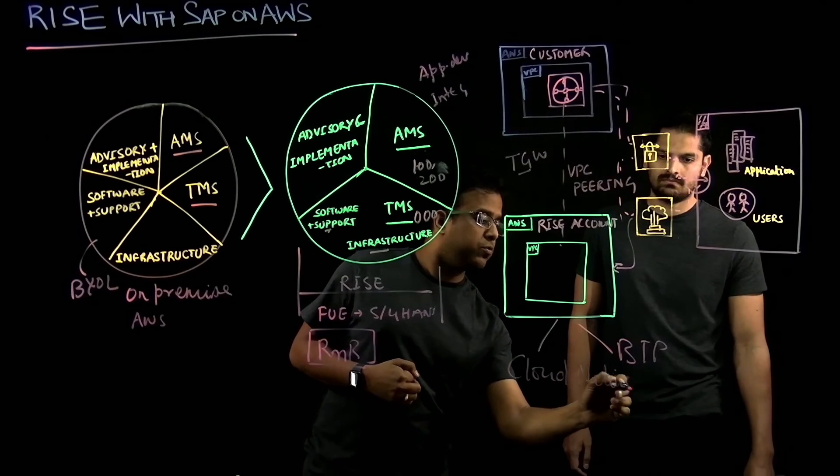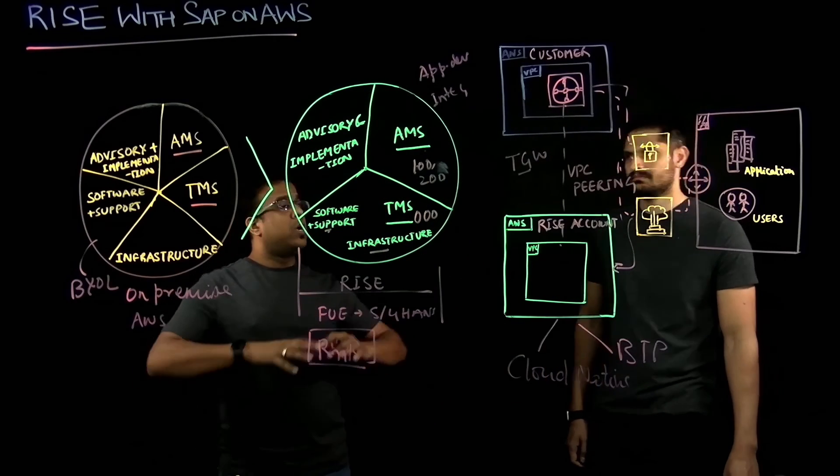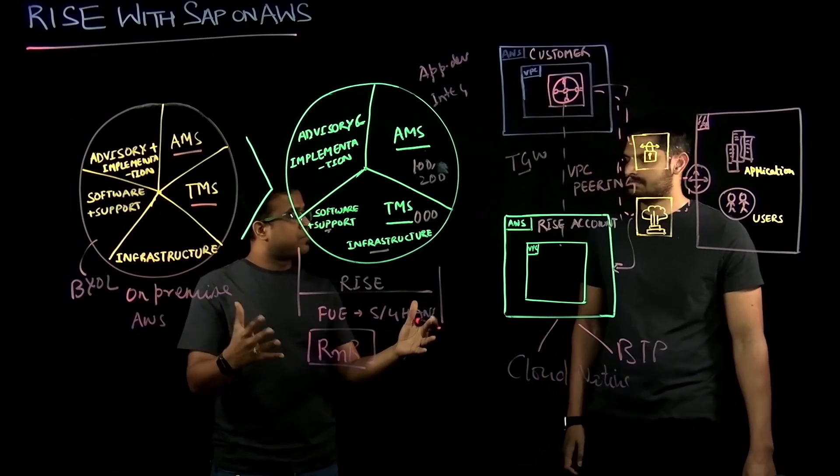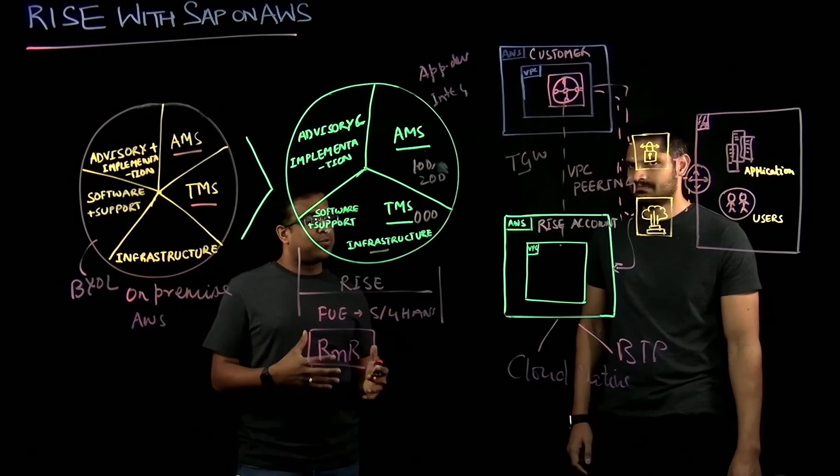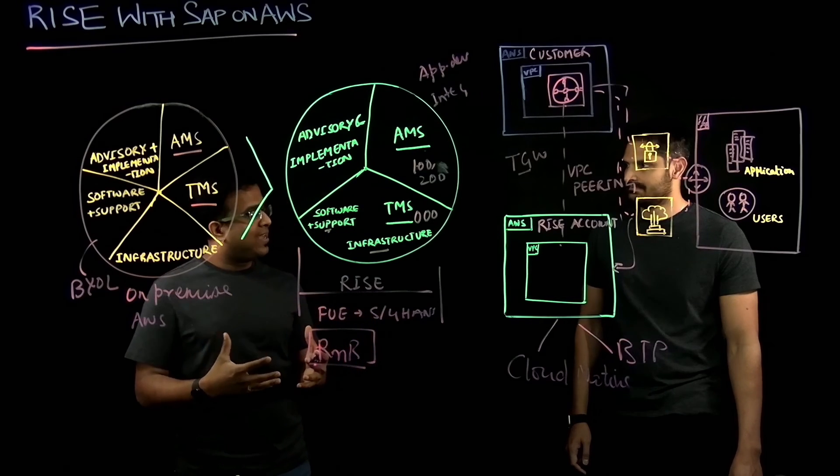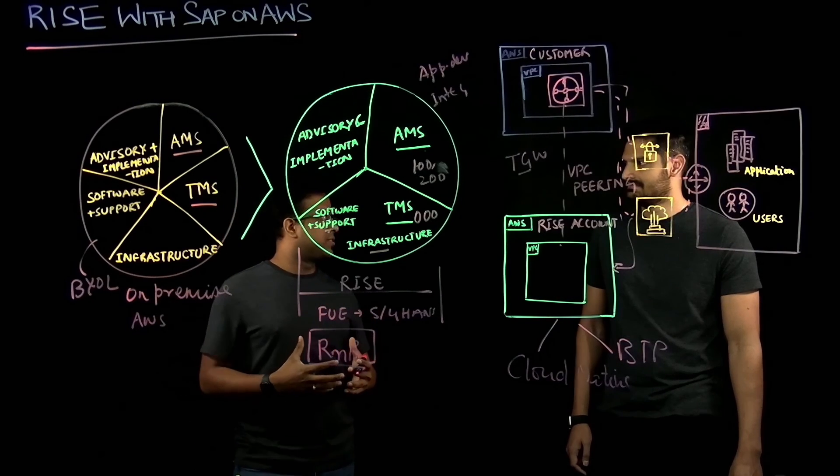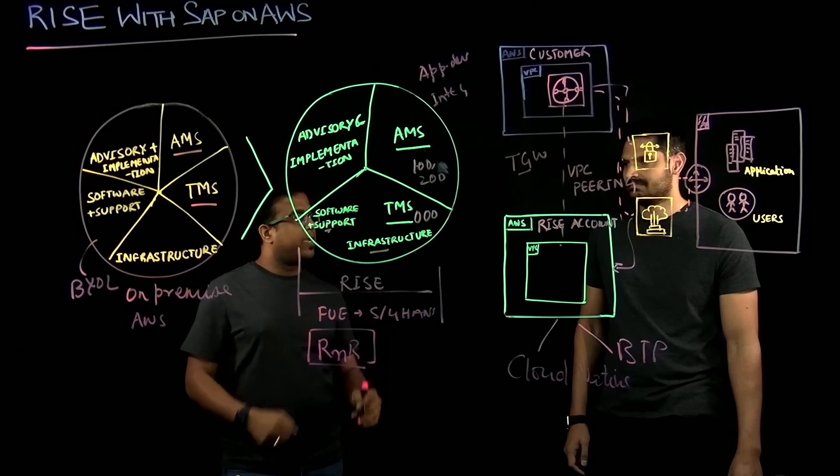So, customers can use different modernization options to innovate around the core and for that we have an upcoming video, Ayapa, where we will talk in detail about how to keep the core clean and use BTP and cloud native services to extend or innovate around the core.